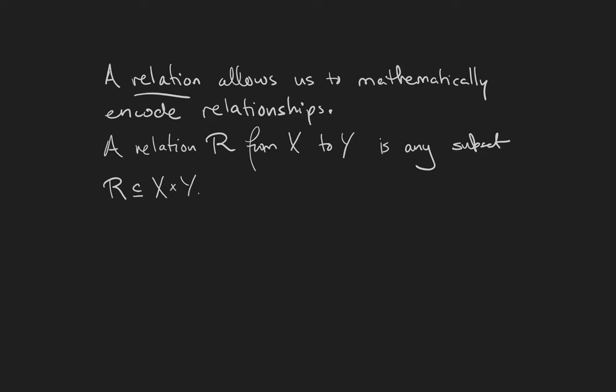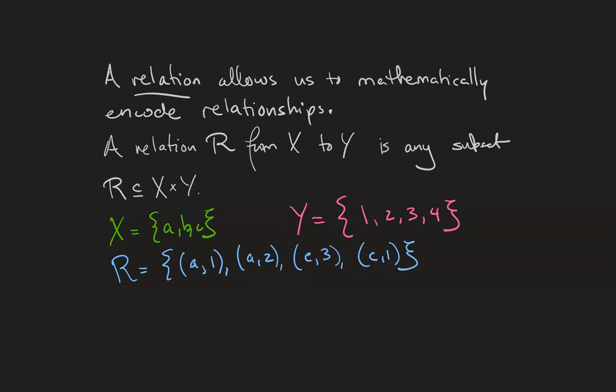For example, if our sets are the set A, B, C, and we'll call that X, and the set Y of 1, 2, 3, 4, then a relation between X and Y is the set {(A,1), (A,2), (C,3), (C,1)}. There are many relations between these two sets. I just wrote down one.